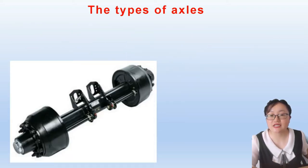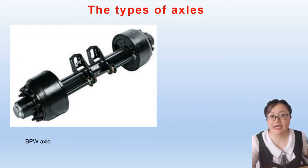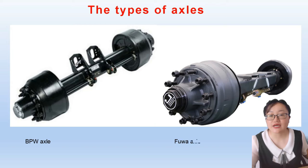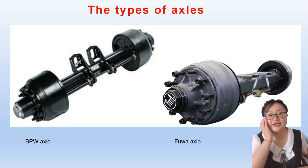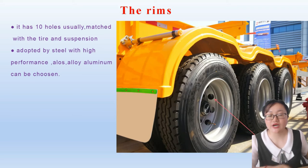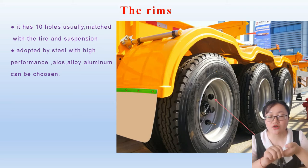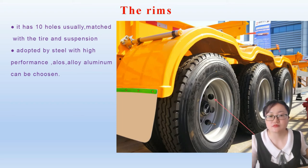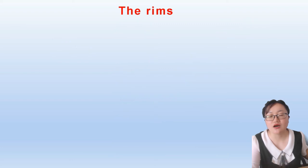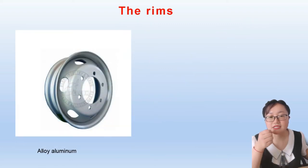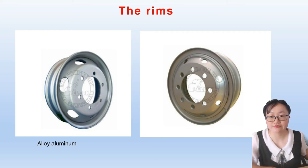These are the different types of axles, like BPW and FUWA axles. Let's move on to the rims. Usually they have 10 bolt holes to match with the tire and suspension. The rims are made of alloy steel or alloy aluminum with high performance. This is our alloy aluminum rim and this is our alloy steel rim. Both of them are very strong.